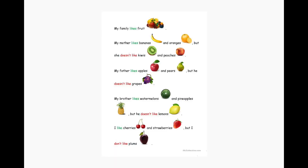Right, now we're going to read a little story. It's only really short and I think it's quite easy to understand. 'My family likes fruit. My mother likes bananas and oranges, but she doesn't like kiwis and peaches. My father likes apples and pears, but he doesn't like grapes. My brother likes watermelons and pineapples, but he doesn't like lemons. I like cherries and strawberries, but I don't like plums.'